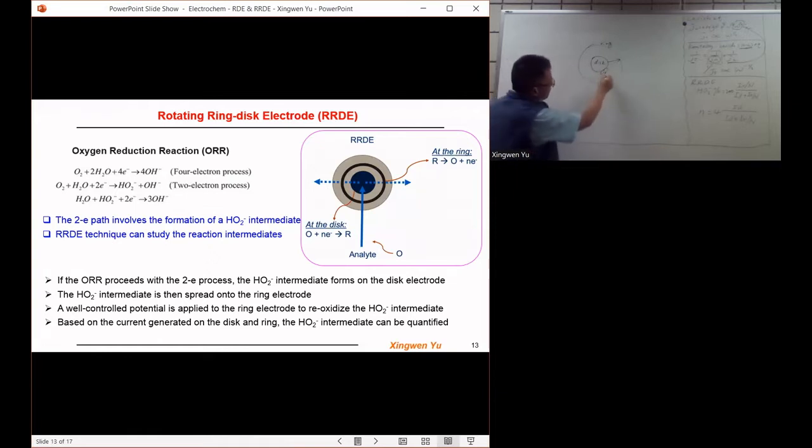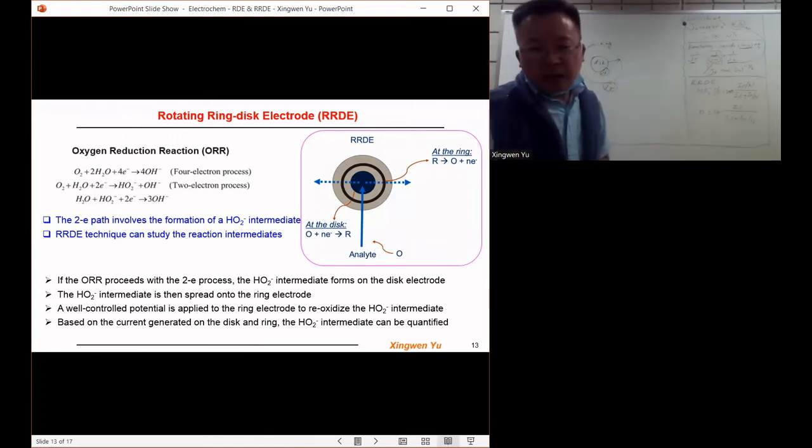Based on this information, we will be able to learn how much the intermediate species has been formed. We can also use this information to calculate the charge transfer number N.